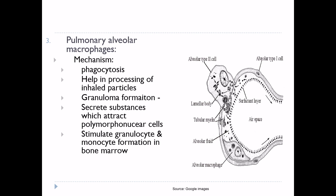Sometimes excess particles can cause growth of fibrous tissue in the alveolar septa, and this growth of fibrous tissue may produce permanent disability. Also, macrophages secrete substances which attract polymorphonuclear cells to the lungs. Macrophages also stimulate granulocyte and monocyte formation in bone marrow. These are the macrophages as the third defensive mechanism in the lungs.